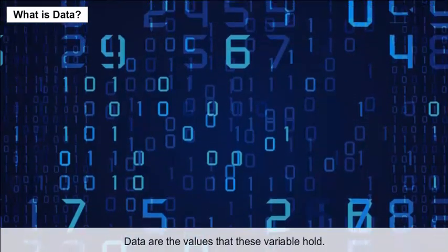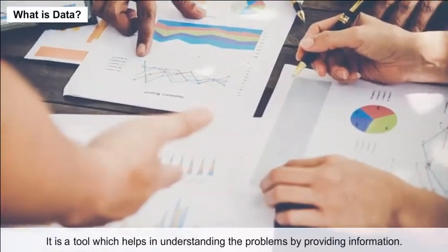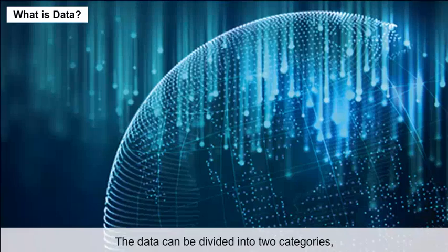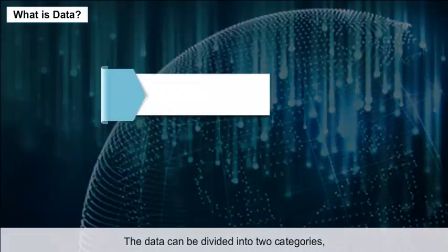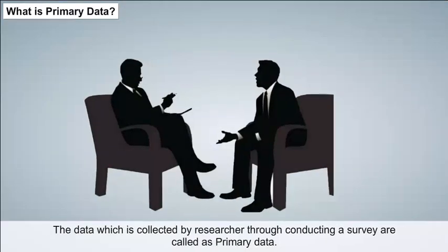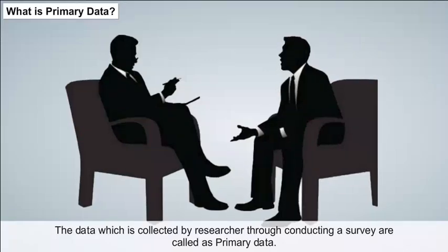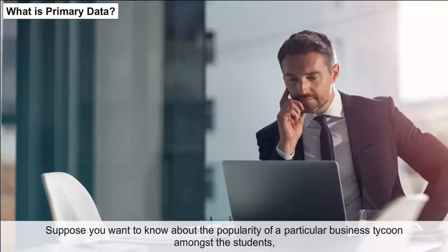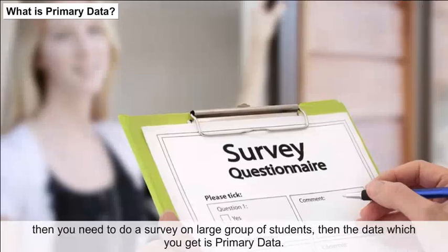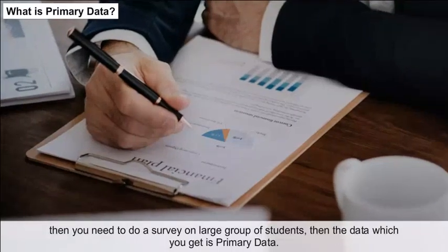What is data? Data are the values that these variables hold. It is a tool which helps in understanding problems by providing information. Types of data: data can be divided into two categories — primary data and secondary data. Primary data is the data collected by a researcher through conducting a survey. For example, if you want to know about the popularity of a particular business tycoon amongst students, you survey a large group of students — the data you get is primary data.